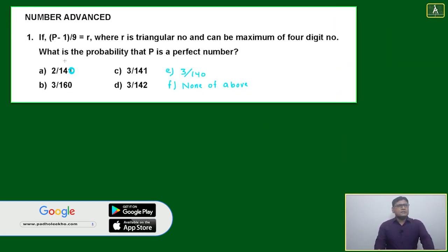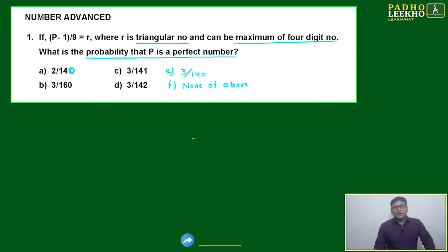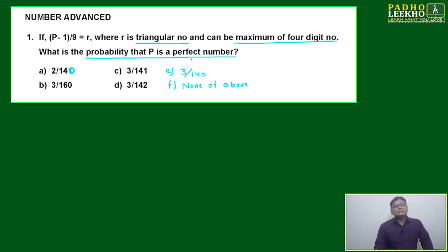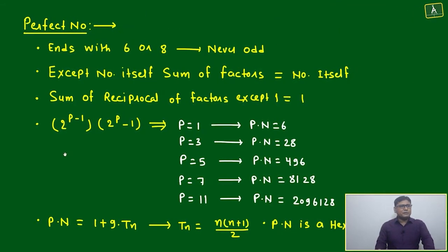Let's try to read this question: 'If p minus 1 divided by 9 equals r, where r is a triangular number and can be maximum a four-digit number, what is the probability that p is a perfect number?' Your first challenge is: what is a perfect number? It is not a perfect square, not a perfect cube — it is a perfect number. If you don't know the mathematical definition of a perfect number, it is difficult to interpret this question, and even more so how triangular numbers are interrelated with perfect numbers.